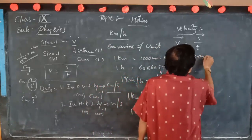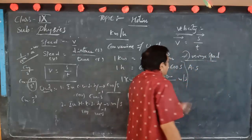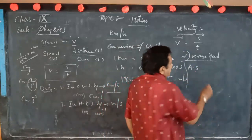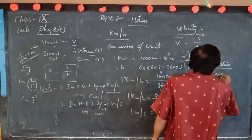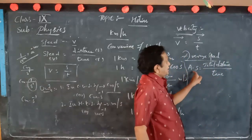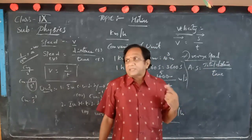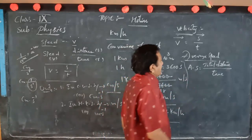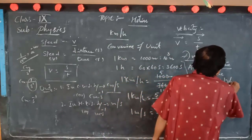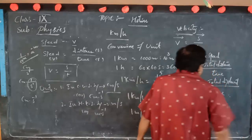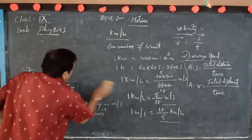Next is average speed. Average speed is equal to total distance covered by the body divided by time taken. Similarly, average velocity is total displacement divided by time taken.